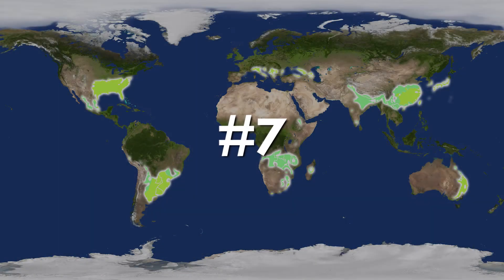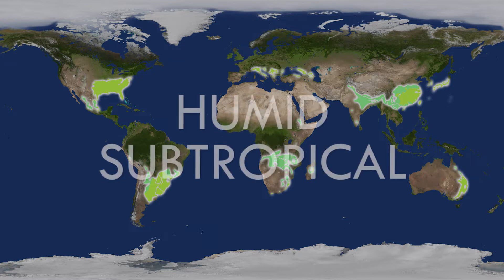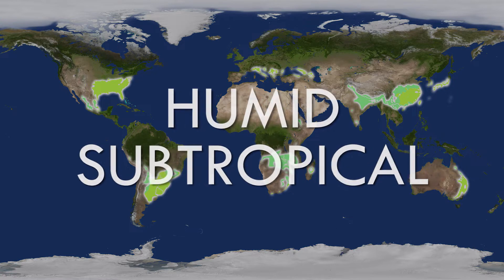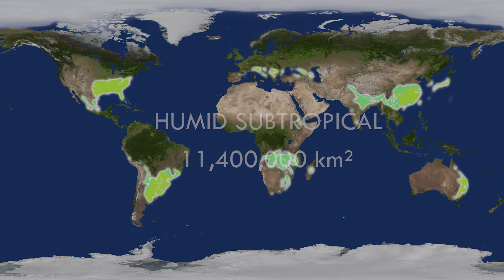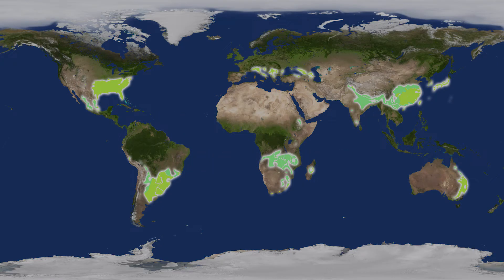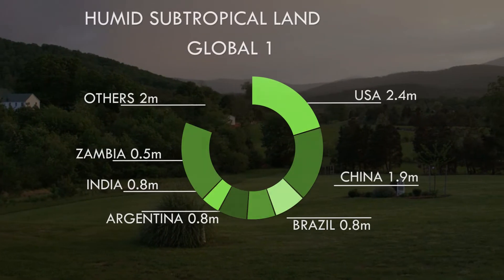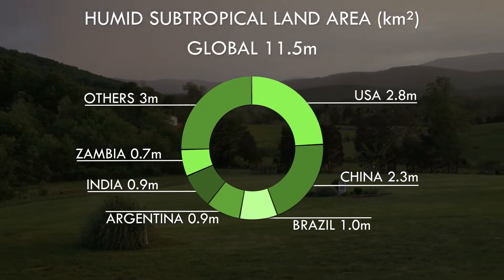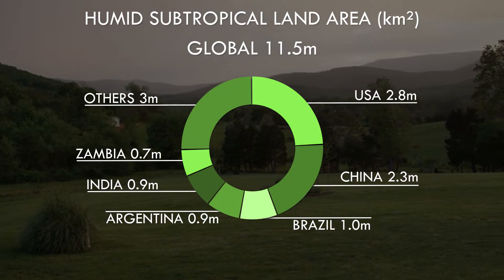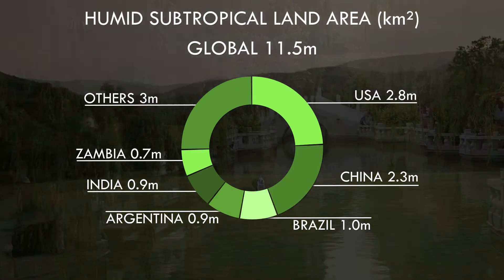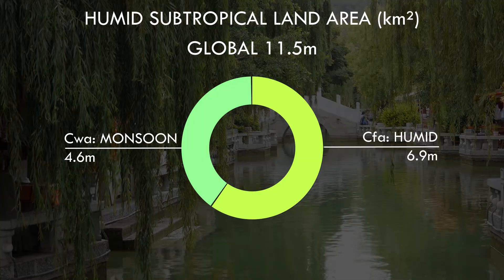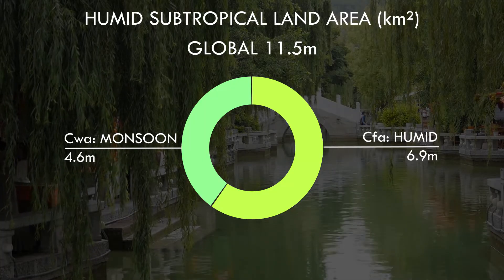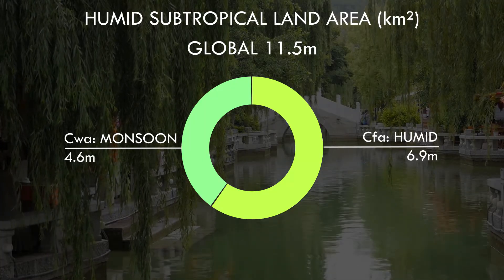Onto number 7 in our climate land areas list, and we have the climate zone that has the largest population of any other – the humid subtropical, of hot summers and cool winters mixed with plenty of rain occurring on the eastern fringes of each continent. Almost half of the global land area of this type occurs in just two countries, the United States and China, with the rest scattered across other continents. The year round rain variant is the larger of the two, with the smaller being the monsoon form, with dry winters.